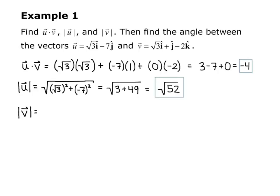Magnitude of v is the square root of the square root of 3 squared, plus 1 squared, plus negative 2 squared, which gives me the square root of 3 plus 1 plus 4, which simplifies to the square root of 8.